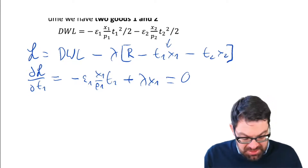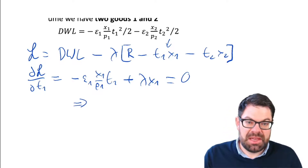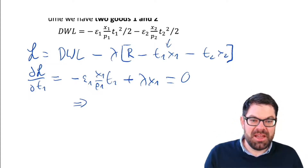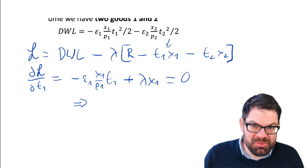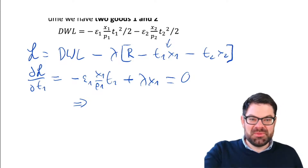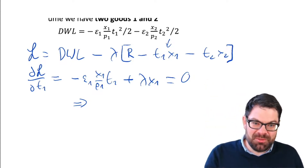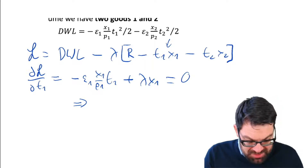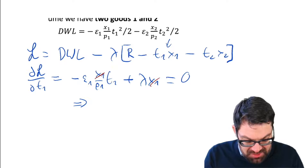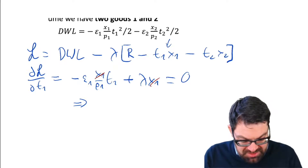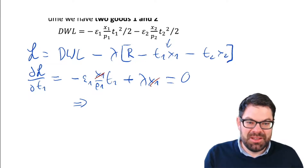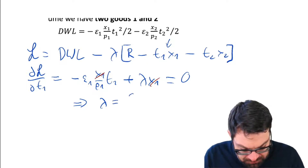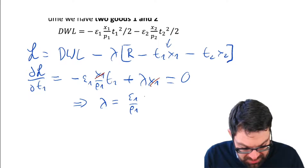We can immediately solve for the Lagrange multiplier lambda, which has an economic interpretation in more advanced courses. The x₁ cancels out, and we get: λ equals ε₁ divided by p₁ times t₁.